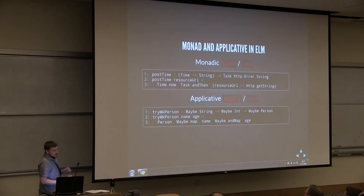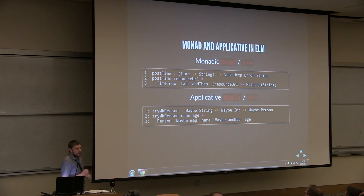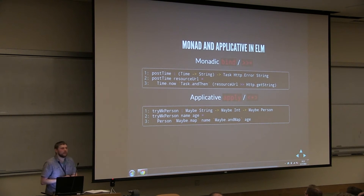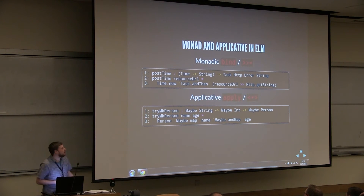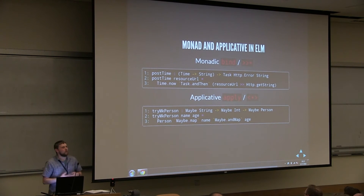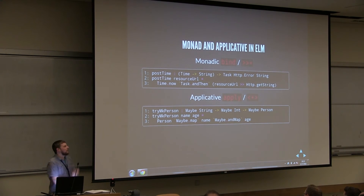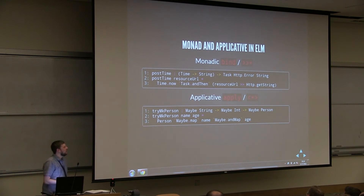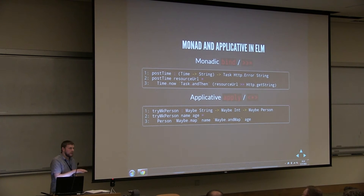In Elm, they have monadic binds and applicatives, but they don't use the same terms used in other functional languages — they've explicitly eschewed them. They use 'andThen' for bind and 'andMap' for apply. Elm is designed for JavaScript developers coming from a highly imperative world who are just stepping into a functional language, so this is a hand up to help them in. And in their documentation, at the very bottom, they note: for more experienced functional programmers, you'll recognize this as 'apply' or the applicative.